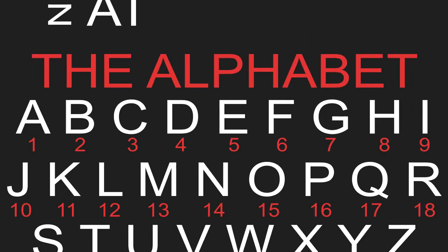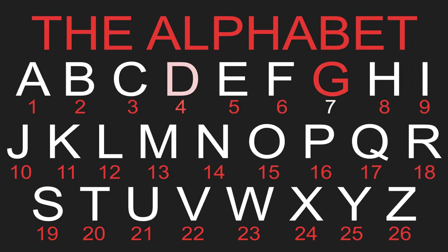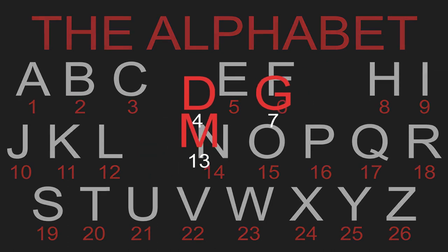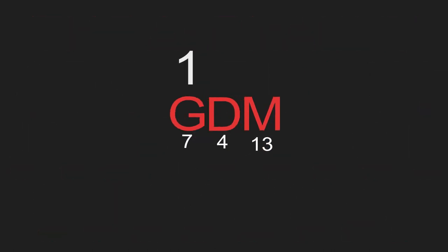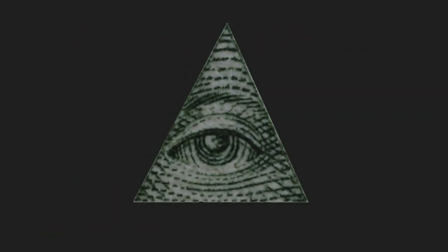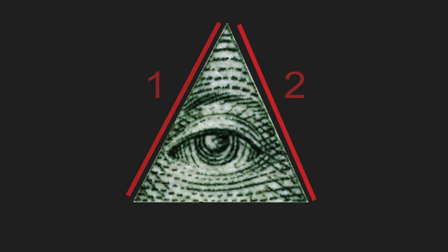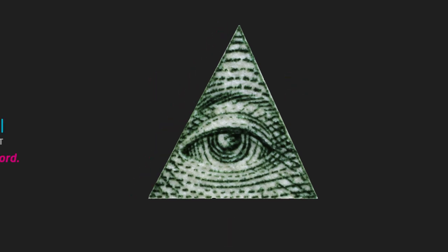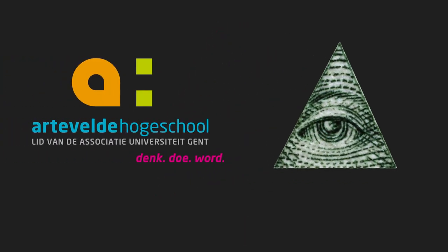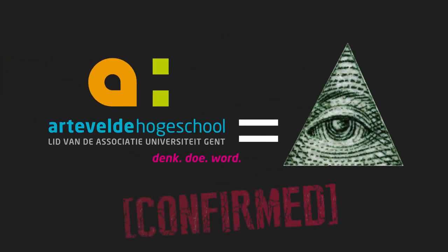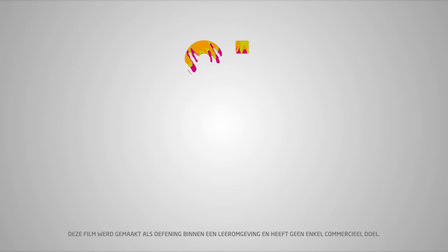Now let's take a look at the alphabet. Seven syllables, four different colors, 13. GDM. GDM has three letters. The Illuminati triangle has three sides. Art of Elder is Illuminati confirmed. Art of Elder.